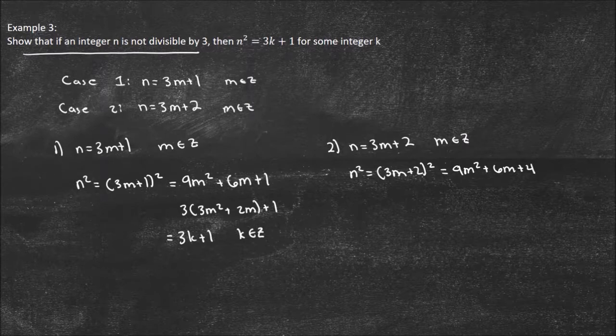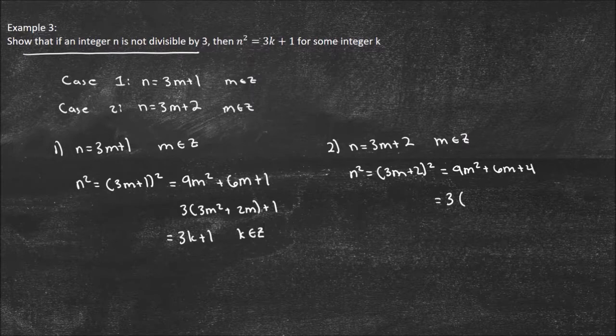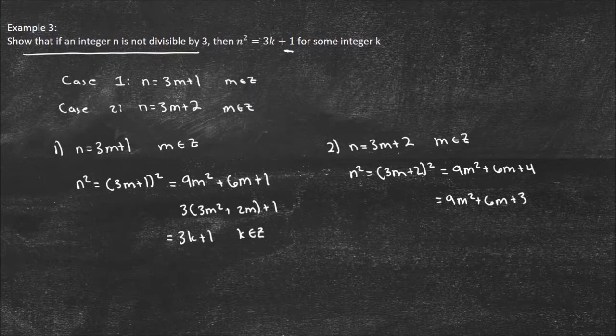What can I do here? I can take out my 3. I'm going to actually break it up first. So I'm going to break this into 9m squared plus 6m. Because I know I want 1 on the end right here, so I'm going to do 6m plus 3 plus 1.